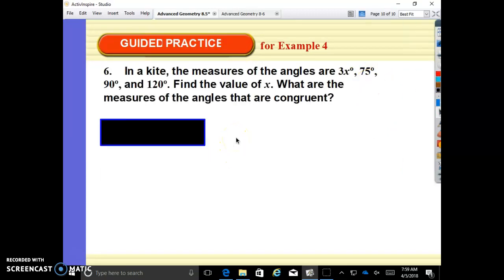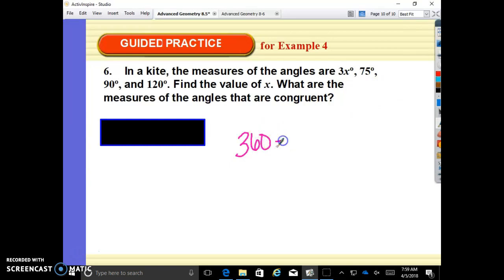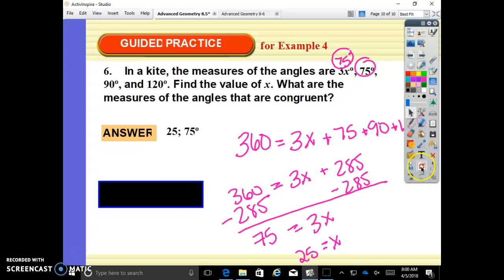In a kite, the measures of the angles are given. Find the value of x. What are the measures of the angles that are congruent? All right. So we know that if it's a kite, it's a quadrilateral. It all adds up to 360. 360 equals n minus 2 times 180 where n is the number of sides. So 4 minus 2 is 2, times 180 is 360. So 360 equals 3x plus 75 plus 90 plus 120. So 120, 210, 285. What is 360 minus 285? 75. 75 equals 3 times what? So x equals 25. When I plug back in, 25 times 3 is 75. So x is 25. The angles that are congruent, the two congruent angles are 75 degrees.